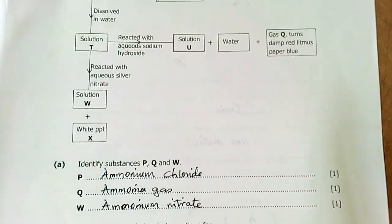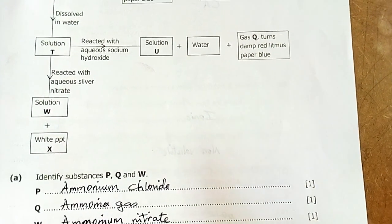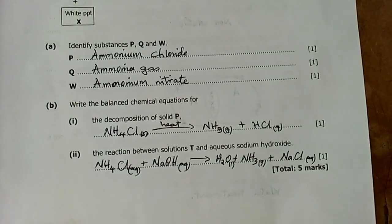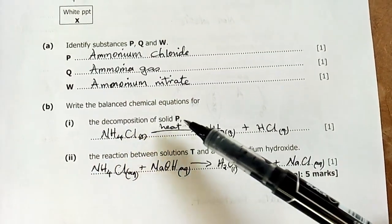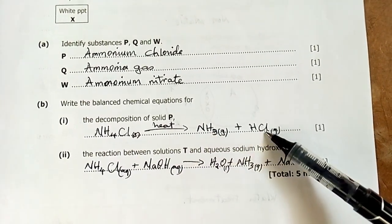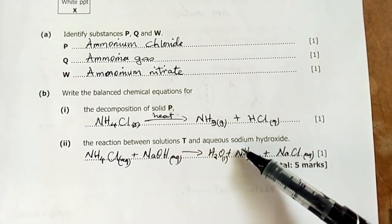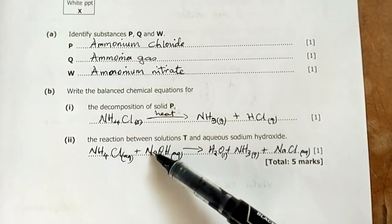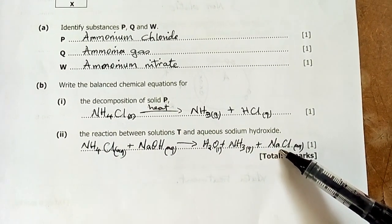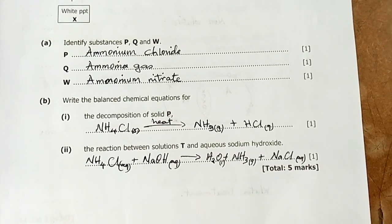Question B: Write the balanced equation for decomposition of solid P when heated—ammonia and hydrogen chloride. Number 2: The reaction between solution T and aqueous sodium hydroxide—ammonium chloride plus sodium hydroxide gives water, ammonia, and sodium chloride. We have five marks. We move on to the next question.